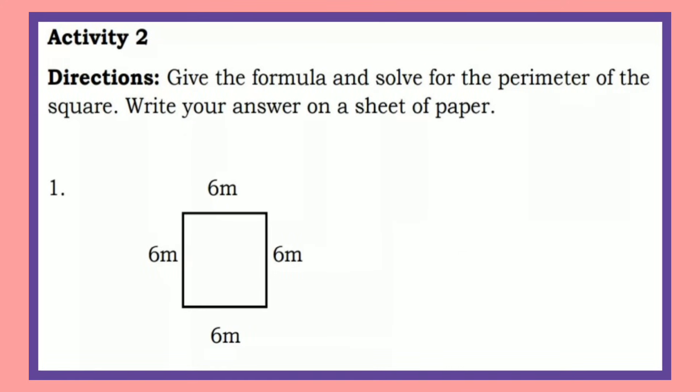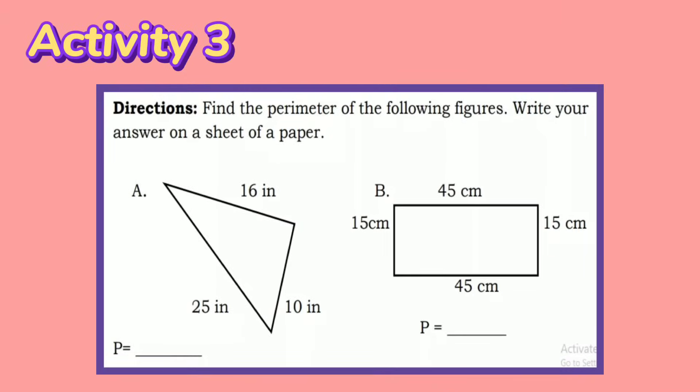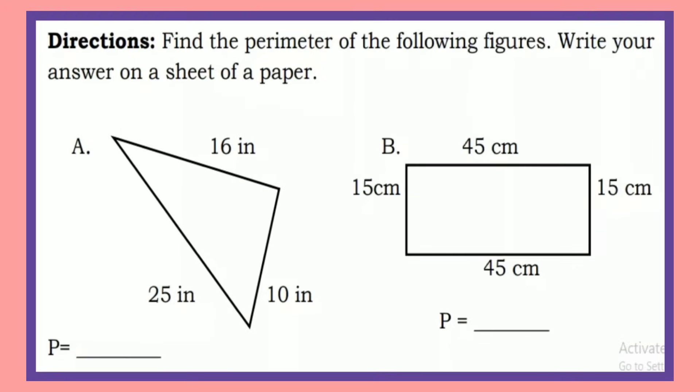How about Activity Number 2? Give the formula and solve for the perimeter of the square. The formula is P equals S plus S plus S plus S. P equals 6 plus 6 plus 6 plus 6 equals 24 meters. I know that you can do this — another activity: find the perimeter of the following figures.